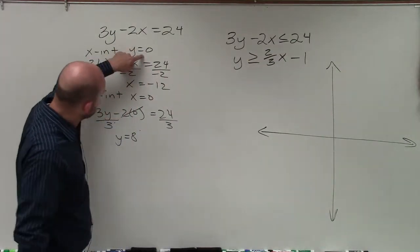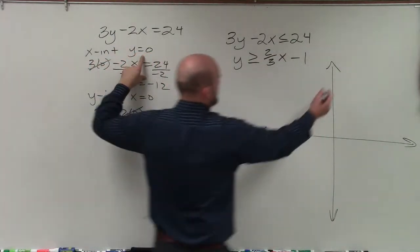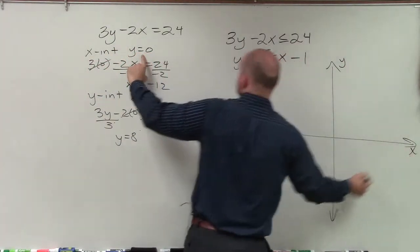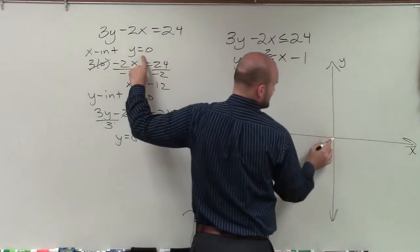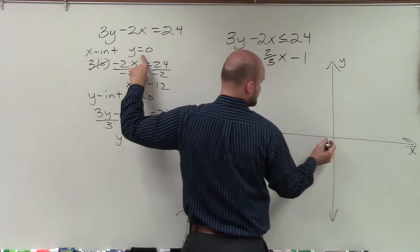So again, when y equals 0, x equals negative 12. So I have my y-axis, x-axis. When y equals 0, that means I'm not going up or down at all, x equals negative 12.